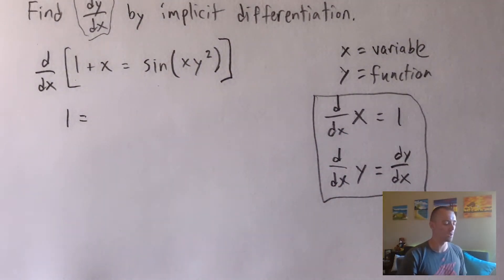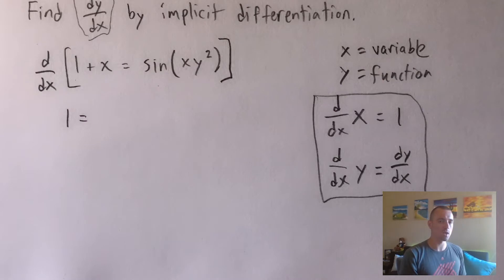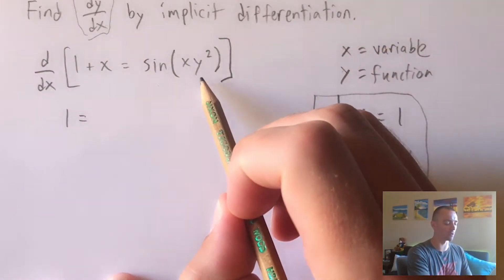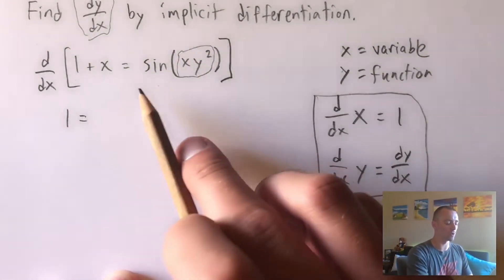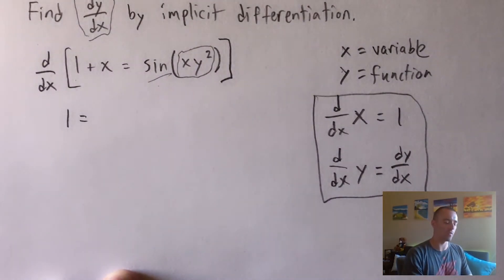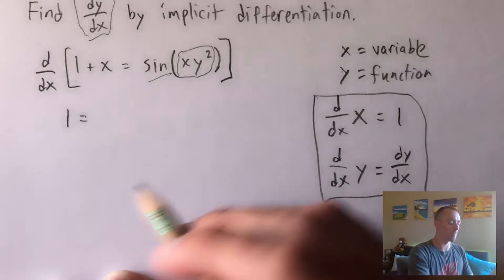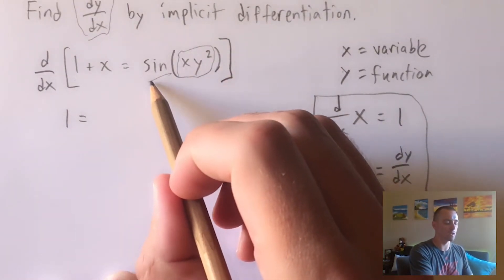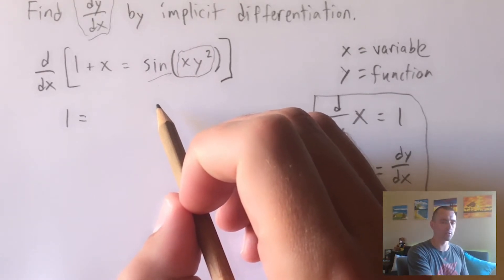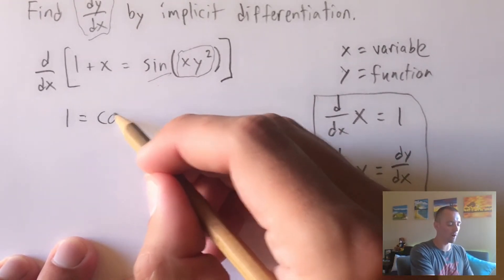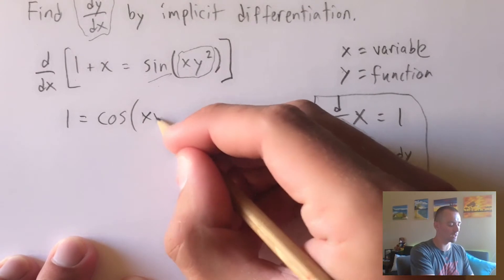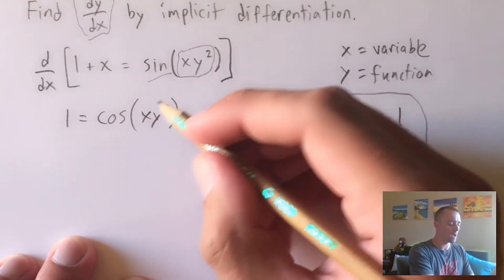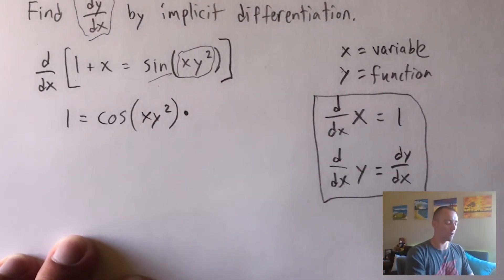That tells us we're going to have to use chain rule. Chain rule says: take the derivative of the outside function, leave the inside function alone, then multiply by the derivative of the inside function. Here, x times y squared is what's being plugged into sine, so sine is our outside function and x times y squared is our inside. The derivative of the outside gives us cosine of x times y squared — leaving the inside alone.